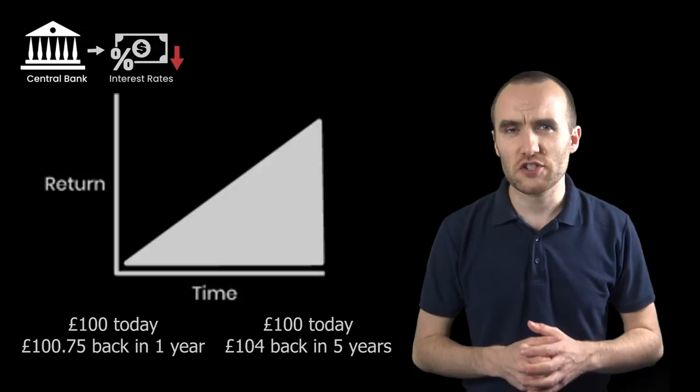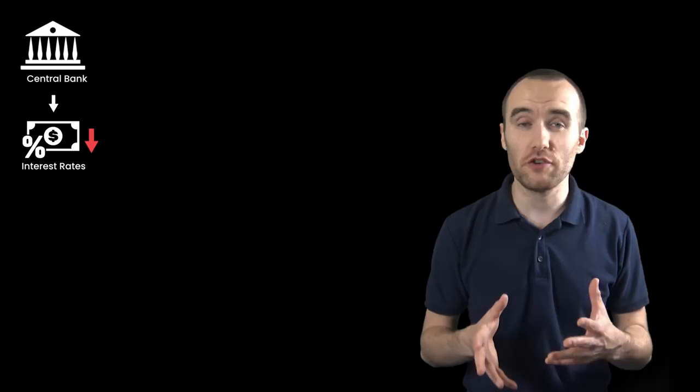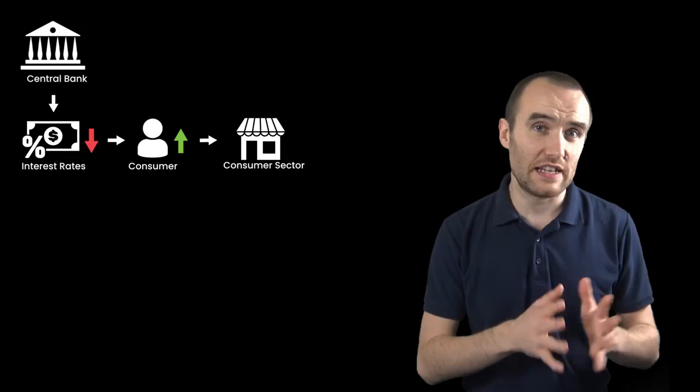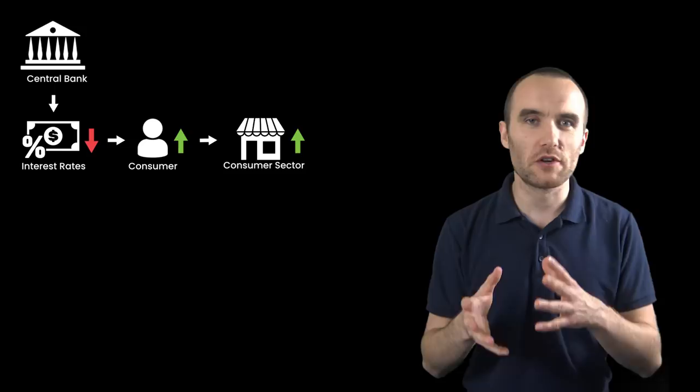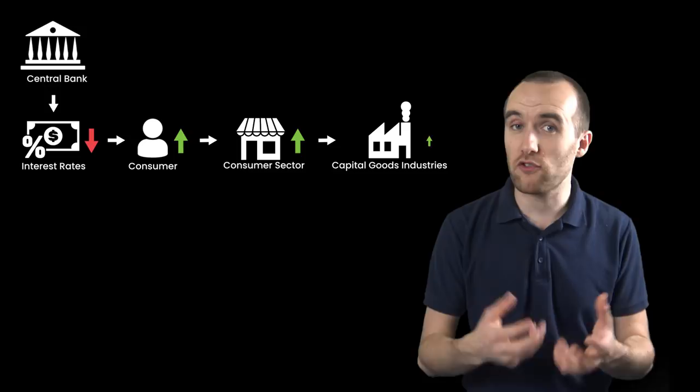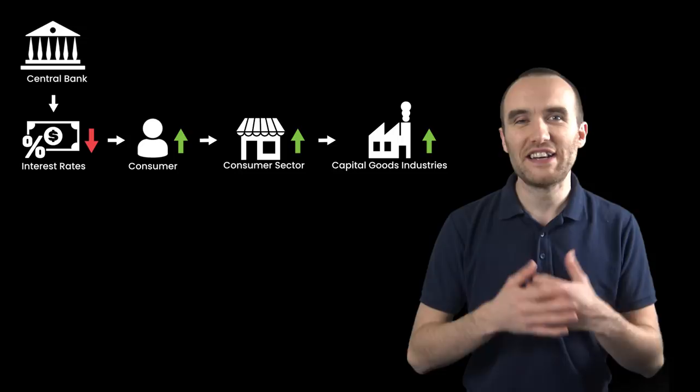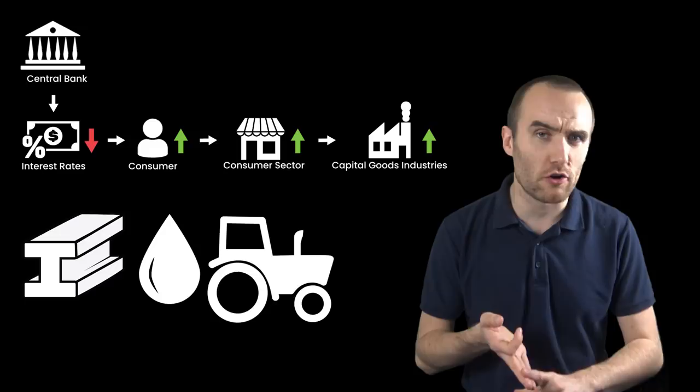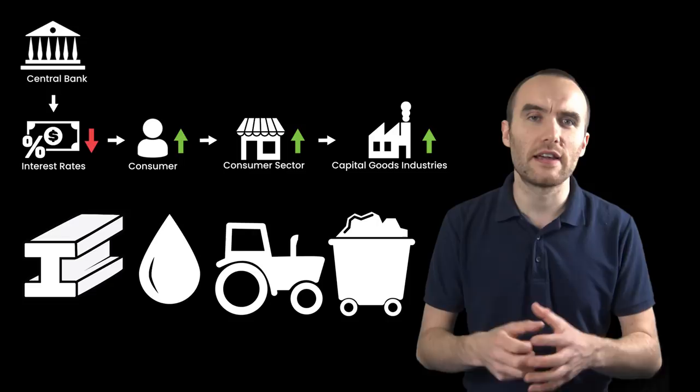The state bank reduces the interest rate, and sure enough consumers go out and spend money. The shops then see that there's increased demand, and think: great, let's go buy some more consumer goods to sell. The consumer goods industries are really happy, so they increase production of consumer goods to sell to the shops. Of course, they need resources from heavy production industries like steel, oil, agriculture and mining, and so this signals that they also need to boost production.